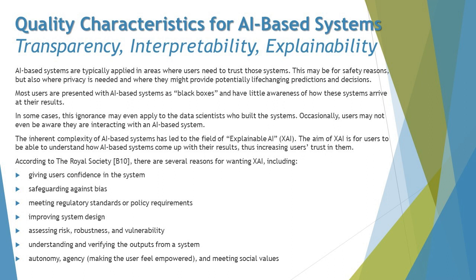The very first thing we're talking about today is transparency, interpretability, and explainability of AI-based systems. These three words are quite self-explanatory: AI-based systems must be transparent so the user can understand what exactly makes an AI system take those decisions. The systems must have the right interpretability options, and any AI-based system must have the capability to justify and explain what exactly made it take a decision and how that decision can be justified.